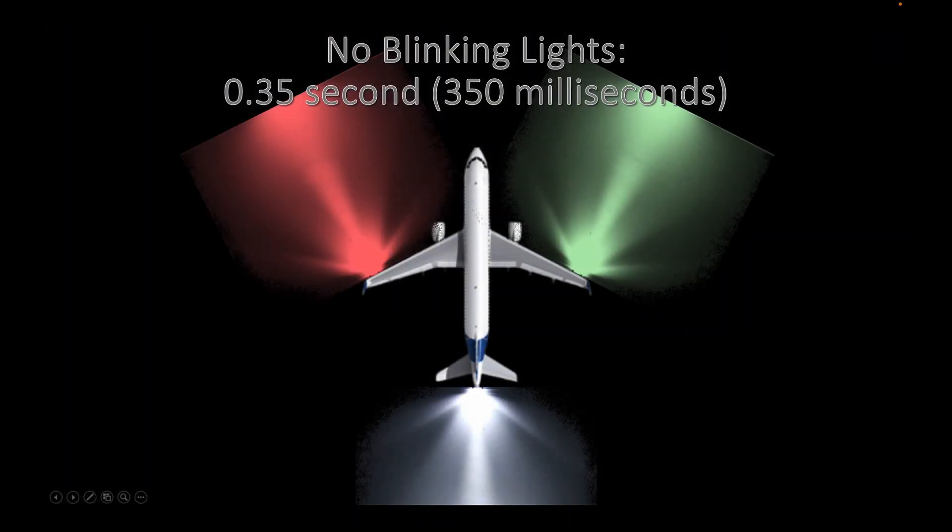When there are no blinking lights, only the navigation lights that are steady red and green as well as the white at the back at the tail will be visible to a spectator.